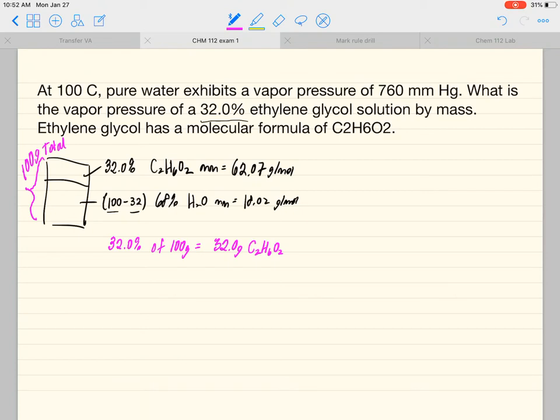And here I can convert this to moles now that we have grams. So if we do this on our calculator, 32 divided by 62.07, that's equal to 0.516.